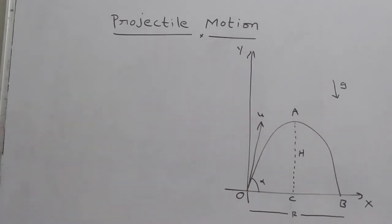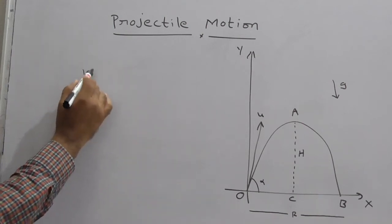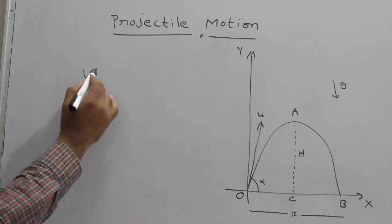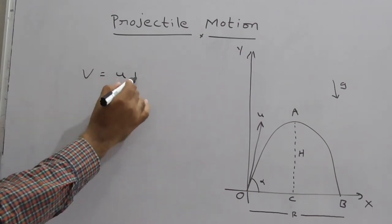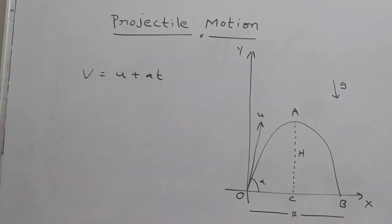To derive some important formulas of projectile motion, we have to use some basic formulas from one-dimensional motion. The first formula is v = u + at, which is a well-known formula.